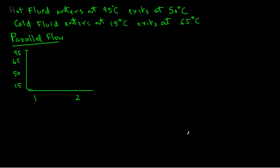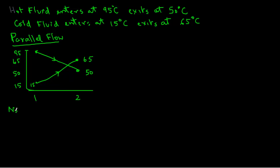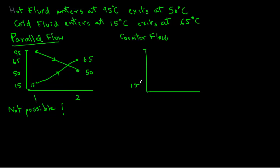Drawing the temperature profiles for parallel flow: the hot fluid starts at 95°C and drops to 50°C at location 2. For parallel flow, the cold fluid enters at location 1 at 15°C and exits at 65°C. But here we have a problem — we cannot have the cold fluid exiting at a higher temperature than the exit temperature of the hot fluid. This is thermodynamically not possible. Anytime the temperature profiles cross, that arrangement is simply not possible, meaning this heat exchanger cannot operate in parallel flow under these conditions.